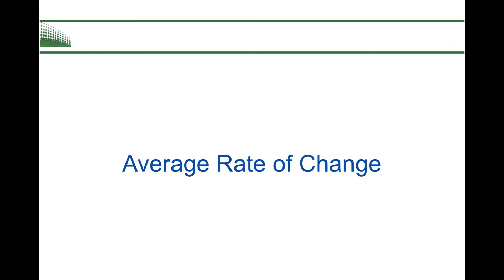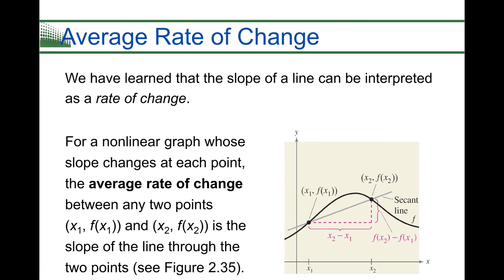Now in previous sections we have looked at slope, and so now we're going to give it another name and we're going to talk about average rate of change. So we've learned that the slope of a line can be interpreted as rate of change. So slope, rate of change, same thing, different words. For a nonlinear graph whose slope changes at each point, so we're looking at not just straight lines but these curved lines with different slopes, we have to look at an average rate of change between the two.